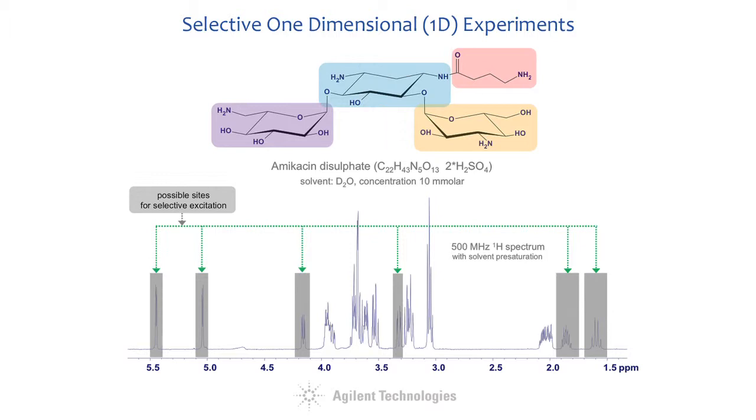In the next few minutes, we are going to illustrate how that complex spectrum can be simplified by a series of 1D z-toxy experiments using the toolset of Agilent's VNMRJ3 software.